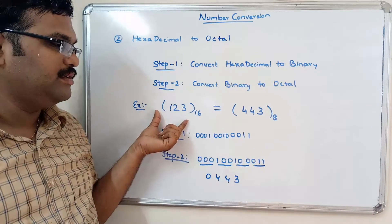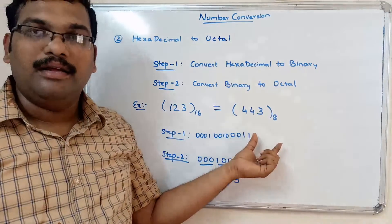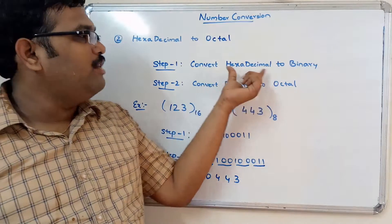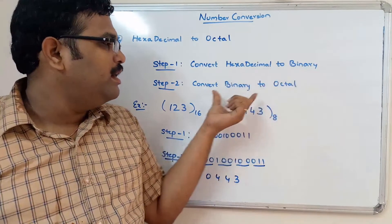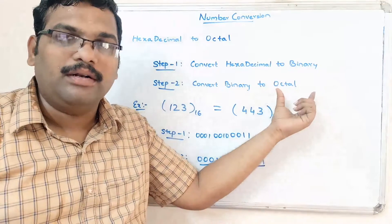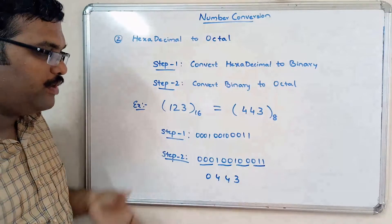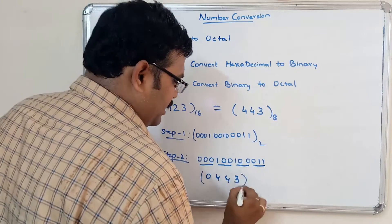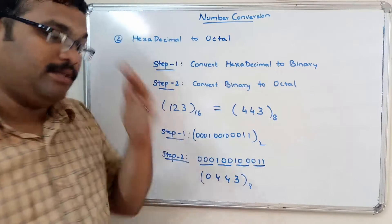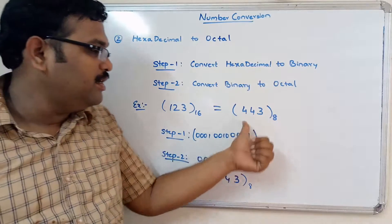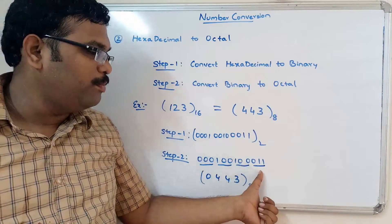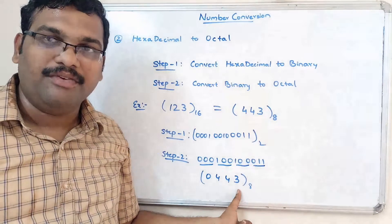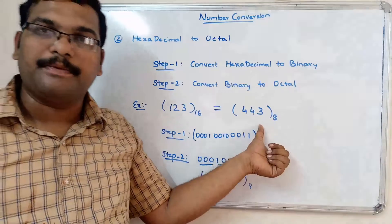So 443 is the octal representation of the given hexadecimal number. This is how we convert hexadecimal to octal. First we converted to binary equivalent using 4-bit groups, then in step 2 we grouped the binary into 3 bits and converted each group to its decimal equivalent, which gives us the octal representation.